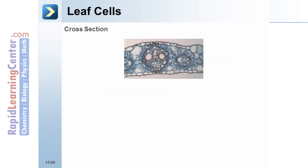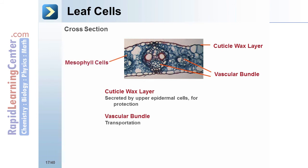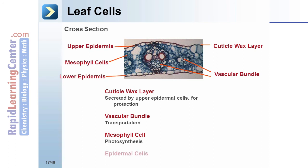In the leaf cell cross-section: the cuticle is the wax layer secreted by upper epidermal cells for protection; vascular bundles provide transportation; mesophyll cells are important in photosynthesis; and epidermal cells are for protection and interaction with the environment.